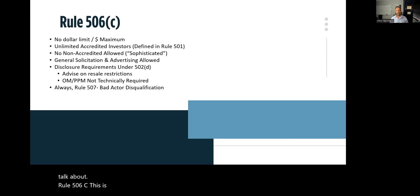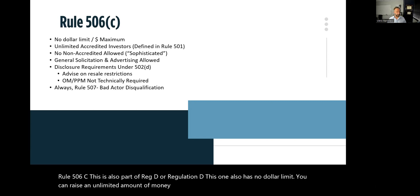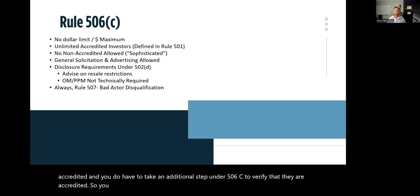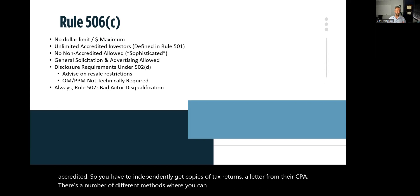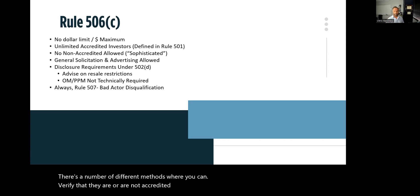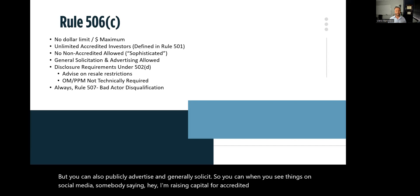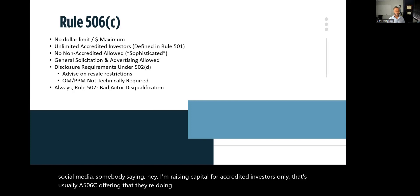Rule 506C is also part of Regulation D and likewise has no dollar limit — you can raise an unlimited amount of money with an unlimited number of accredited investors. However, no non-accredited investors are allowed. You must also take an additional step to verify accredited status independently, such as obtaining copies of tax returns or a letter from their CPA. The key distinction is that 506C allows public advertising and general solicitation, so when you see social media posts saying 'raising capital for accredited investors only,' that's typically a 506C offering — technically private but publicly advertised.